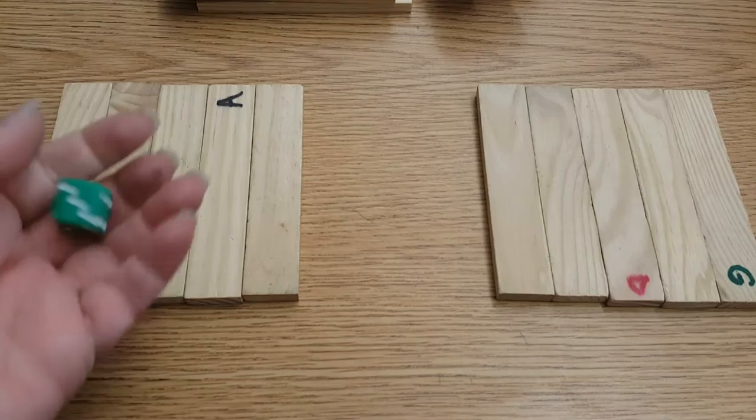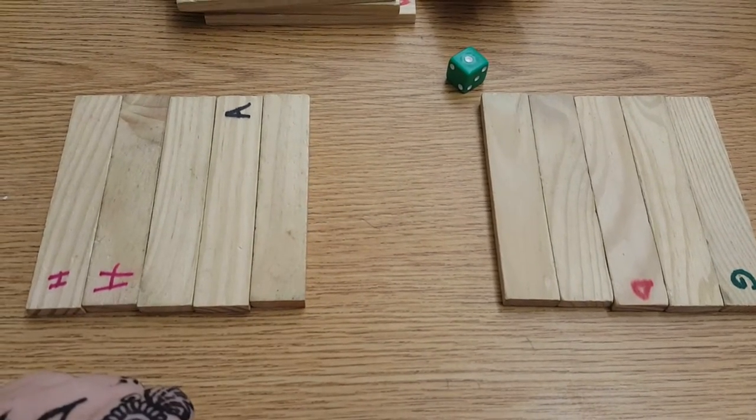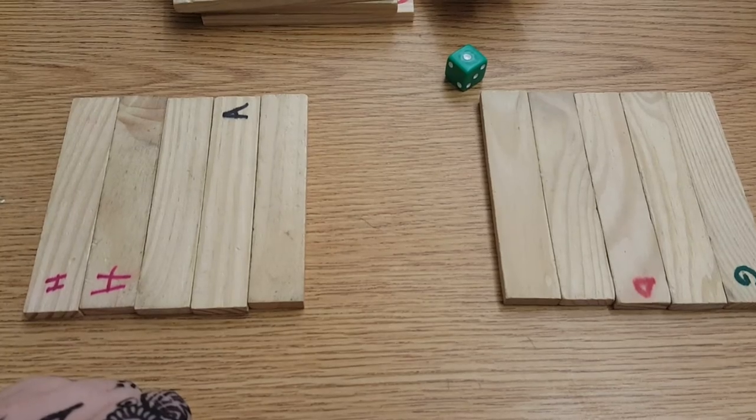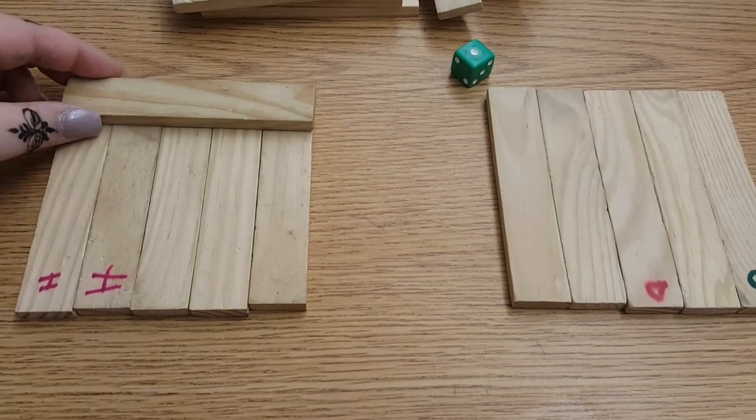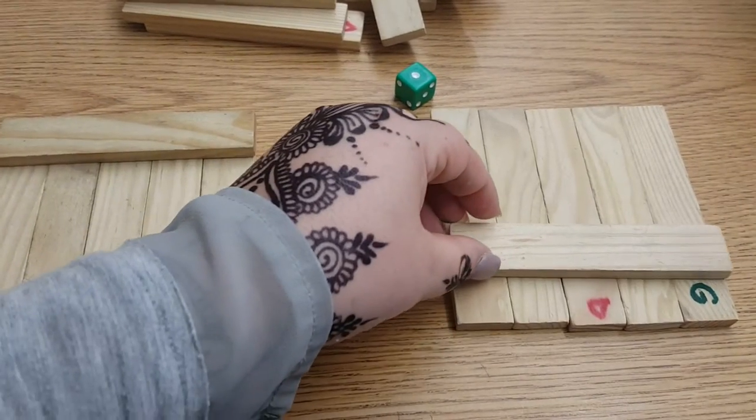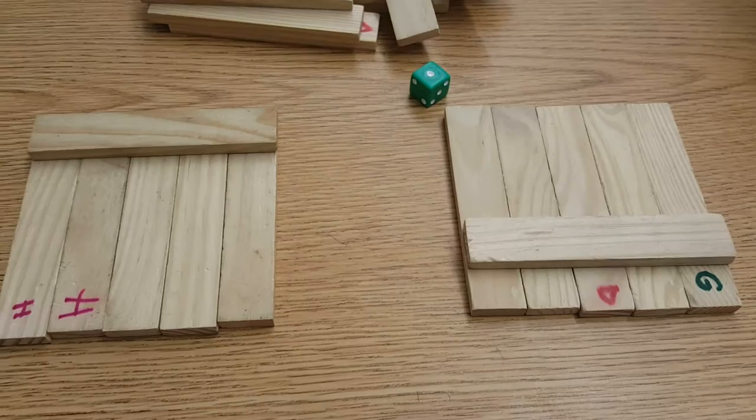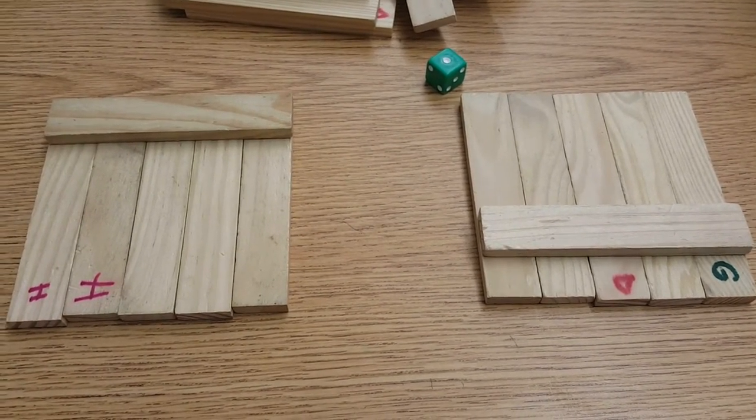The roller will roll a die and whatever it says will indicate what they should do. One and two means a flat piece, so the player can place a flat piece anywhere on the five blocks they have on their table. It is their choice, but the die does say flat so it must be flat.